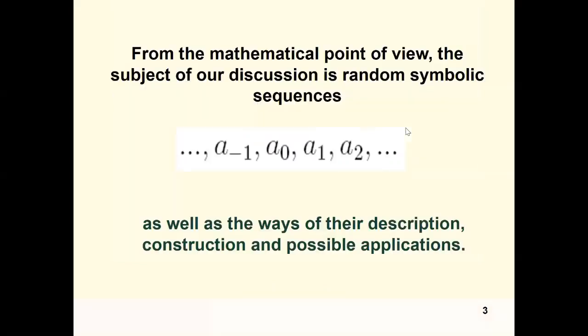From the mathematical point of view, the subject of our discussion is random symbolic sequences as well as the way of their description, construction, and possible applications. Here, a is the name of random variable and subscript indicates their place in the sequence. The variables of our sequence are some abstract symbols or letters.